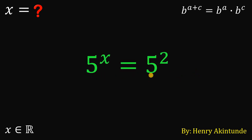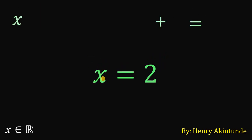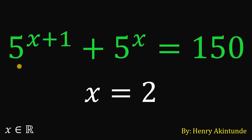Since both sides are equal and the base is equal, their exponents must be equal. Take note that 25 is just 5 raised to the power of 2. Therefore, we can say that x must be equal to 2. So our answer to this question — what is the real value of x that satisfies 5 raised to x plus 1 plus 5 raised to x equals 150 — is x equals 2.